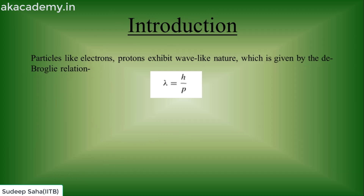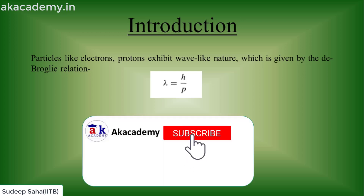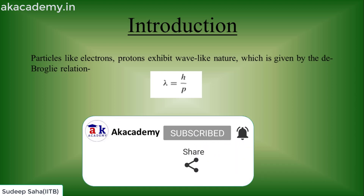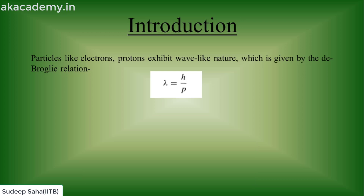As we know, minute particles like electrons and protons exhibit a wave-like nature and also have some particle-like nature. The wave nature is incorporated by the de Broglie hypothesis, which says that a particle with momentum p has a wavelength h over p, where h is Planck's constant, p is the momentum, and lambda is the wavelength associated with the matter wave.